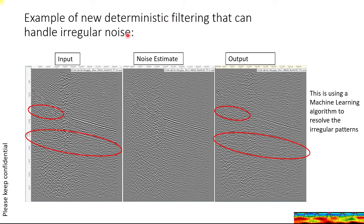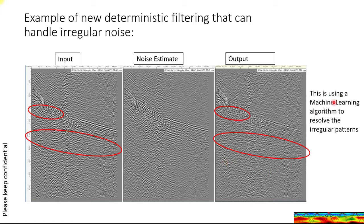Here's an example of the new deterministic filtering that can handle irregular noise. This is a shot gather. You can see some faint reflections, but the noise has resolved guided waves that have irregularity, and there's also some passive noise here. This is really all about searching for patterns, and then the subtraction brings out the reflections a lot better. You can also see some other subtle reflections. This is actually using a machine learning algorithm to resolve the irregular patterns.